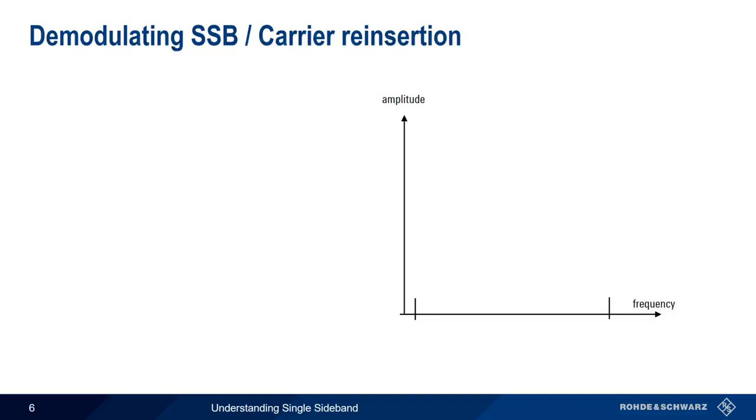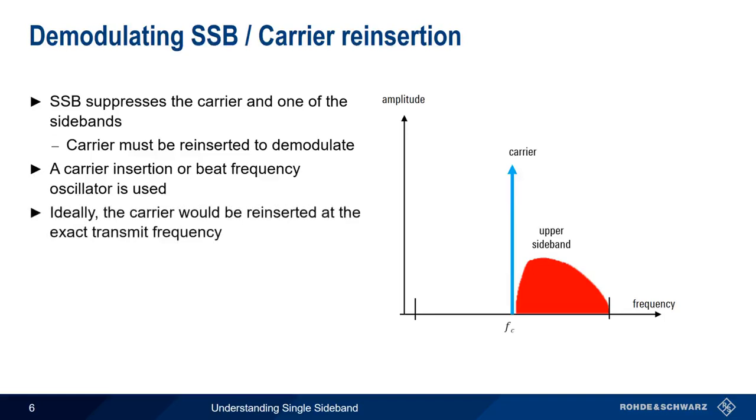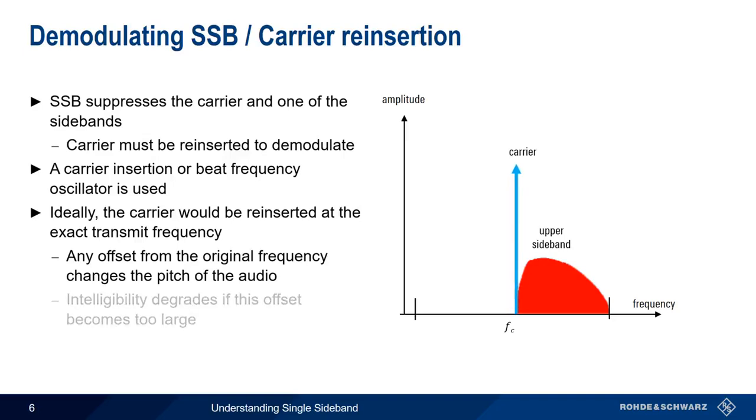On the transmit side, a single sideband transmitter suppresses the carrier and one sideband. On the received side, the carrier must be reinserted before the signal can be demodulated. This is done using a so-called Carrier Insertion Oscillator, or Beat Frequency Oscillator. In the ideal case, the carrier would be reinserted at the precise frequency that was originally used. Any offset from the original frequency will change the pitch of the received audio. If this offset becomes too large, speech can become unintelligible.